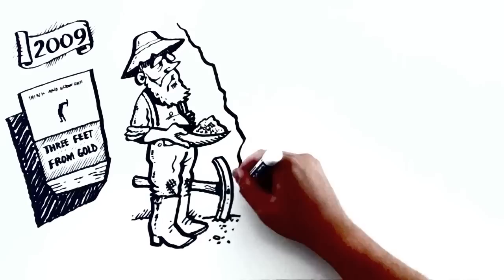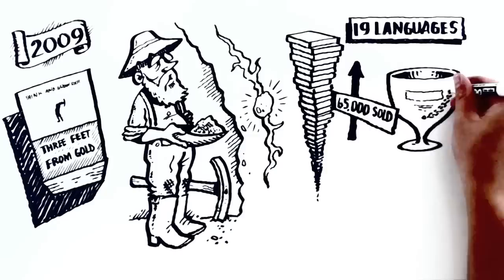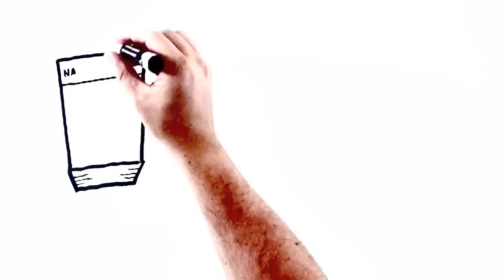Think and Grow Rich: Three Feet from Gold retold the story of R.U. Darby, the miner who gave up a mere three feet away from hitting treasure. Not only did the project sell over 64,000 copies, it was translated into 19 languages.